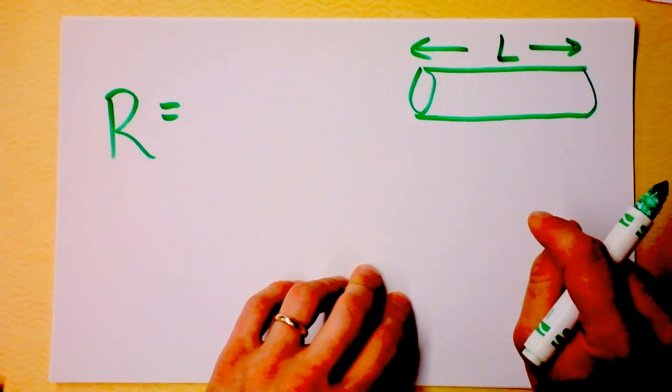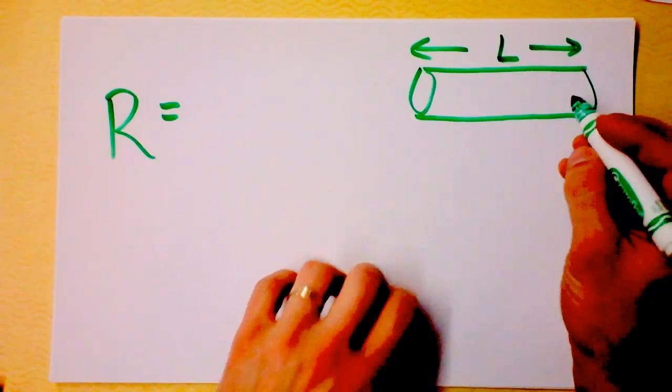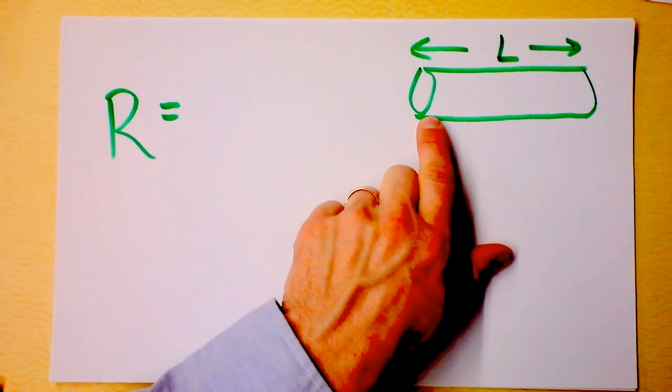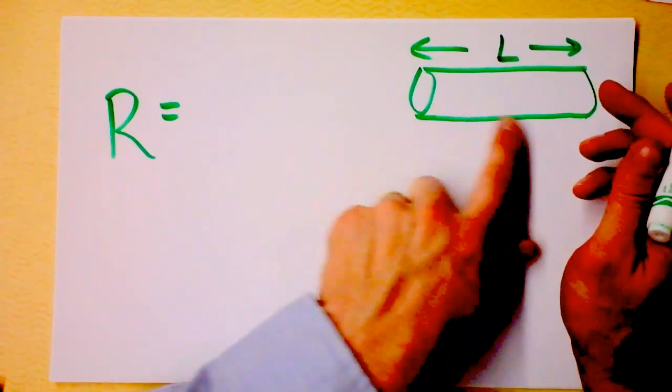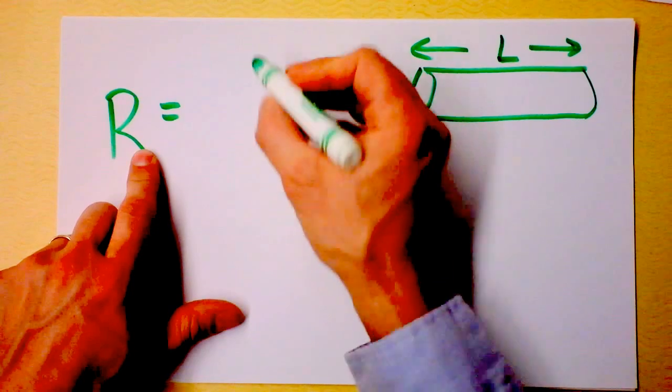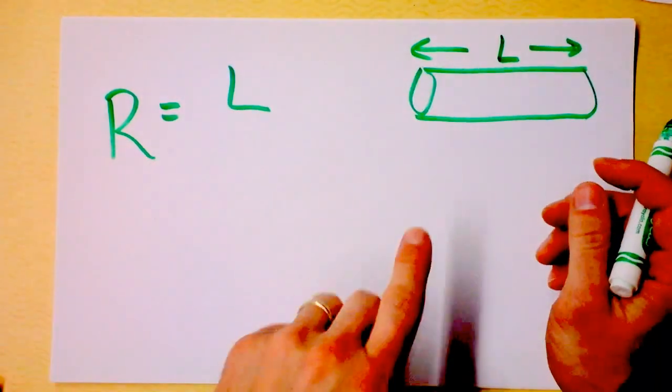I think it probably increased. Check this out: if it's longer then the electricity has further to go and so it will be more difficult for the electricity to get through there. So I'm thinking the resistance probably goes up as L goes up, so I'm going to put it on top of this equation here.